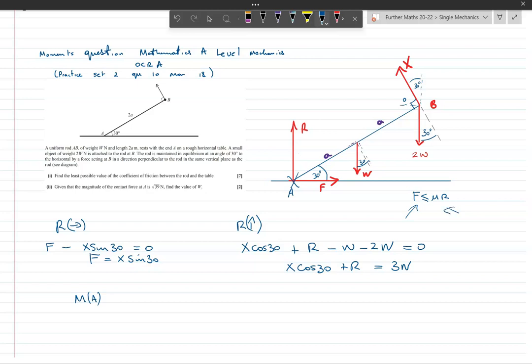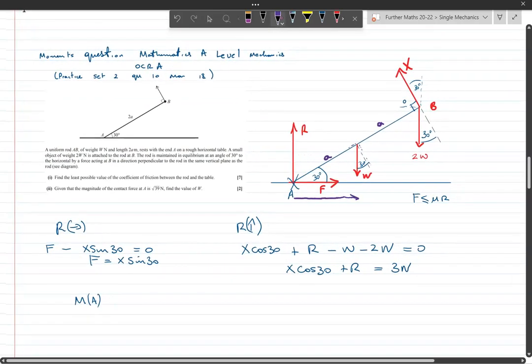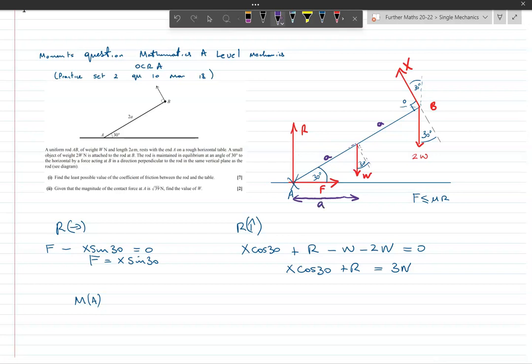Moments about A. We've got two ways of taking moments. One we did in class recently was just to do it directly and just to mark on the perpendicular distances. About the thing moving across there, this perpendicular distance is A cos 30 because of this triangle here. And then obviously this distance here is 2A cos 30.